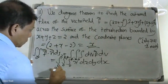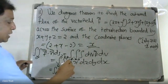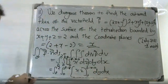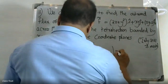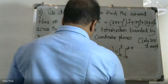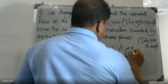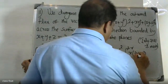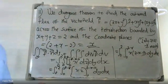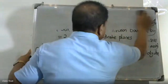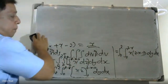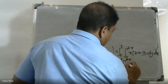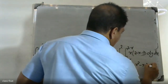We evaluate the integral: integral from 0 to 2, integral from 0 to (2-x), integral from 0 to (2-x-y) of x dz dy dx. After integrating with respect to z, we get integral from 0 to 2, integral from 0 to (2-x), of (2x - x² - xy) dy dx.